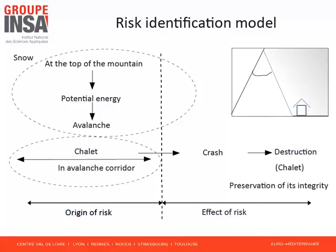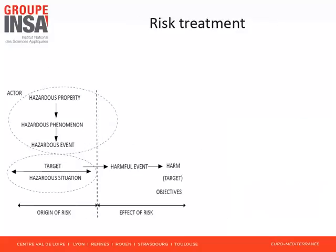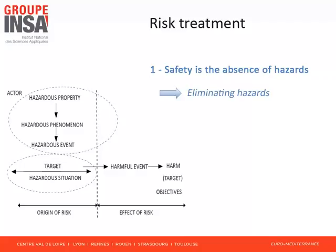The risk identification activity consists in producing such models — that is, in discovering the values of the identification model for all potential risks of the examined circumstances. A specific risk model is an instantiation of the generic identification model. To preserve safety, identified risks have to be controlled, and risk controls are suggested in the risk treatment step. The qualitative approach defines safety in two ways corresponding to two kinds of treatment. First, safety is defined as the absence of hazards — the risk treatment consists in eliminating identified hazards. For a given identified risk, we can avoid the associated hazardous property. Considering the avalanche hazard, one possible risk control is to deliberately trigger small avalanches to limit the mass of snow at the top of the mountain. We may also avoid the hazardous situation.